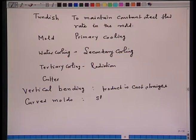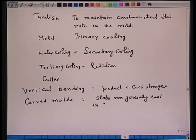Another important development to decrease the height is curved molds. In curved molds, the strand leaves the mold at an arched section. At that point, a strong shell must already have been formed because the mold is in a curved configuration. Straightening is done progressively by passing through circular arcs with increasing radii. What is important in curved mold continuous casting is that the strand which leaves the mold is already curved, and it is gradually withdrawn and subjected to secondary cooling.